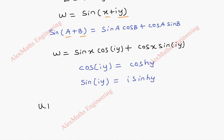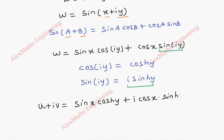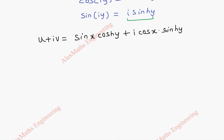And w is u plus i v. Now, sin x is written as this. cos(i y) is cosh(y), and in this place we are going to use i into sinh(y). So I am going to write i in the starting of the term. Then we have cos x into sinh(y).